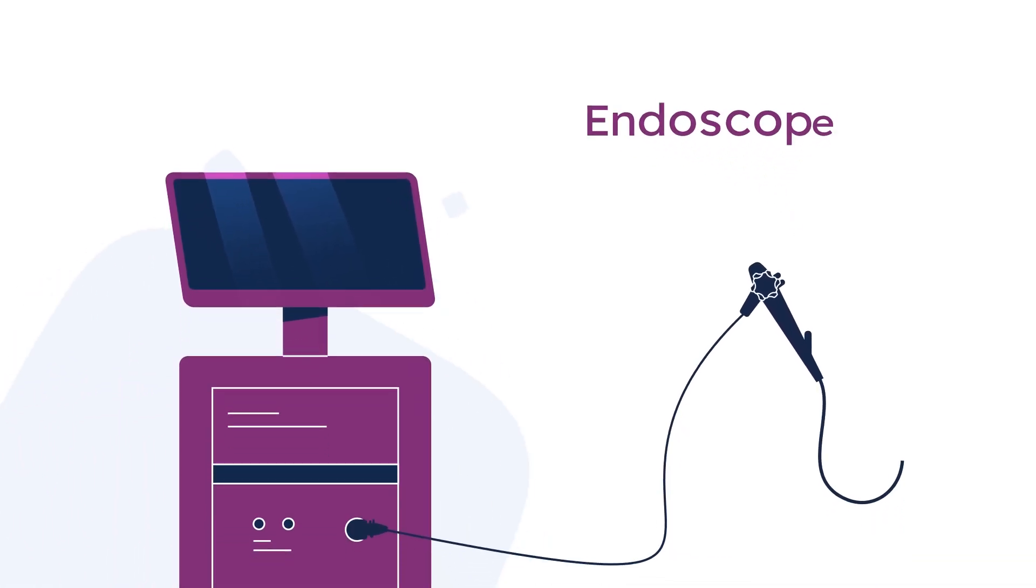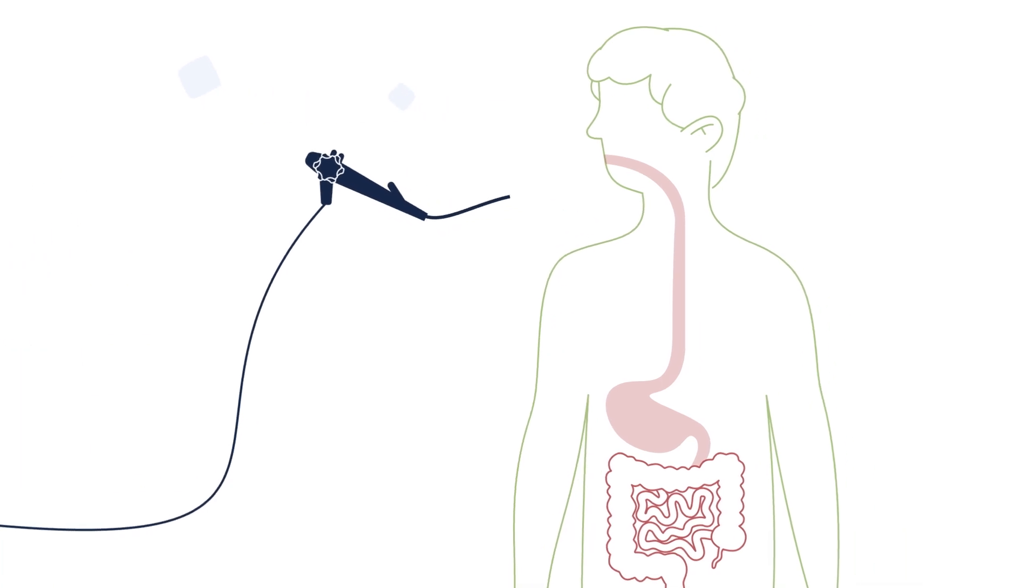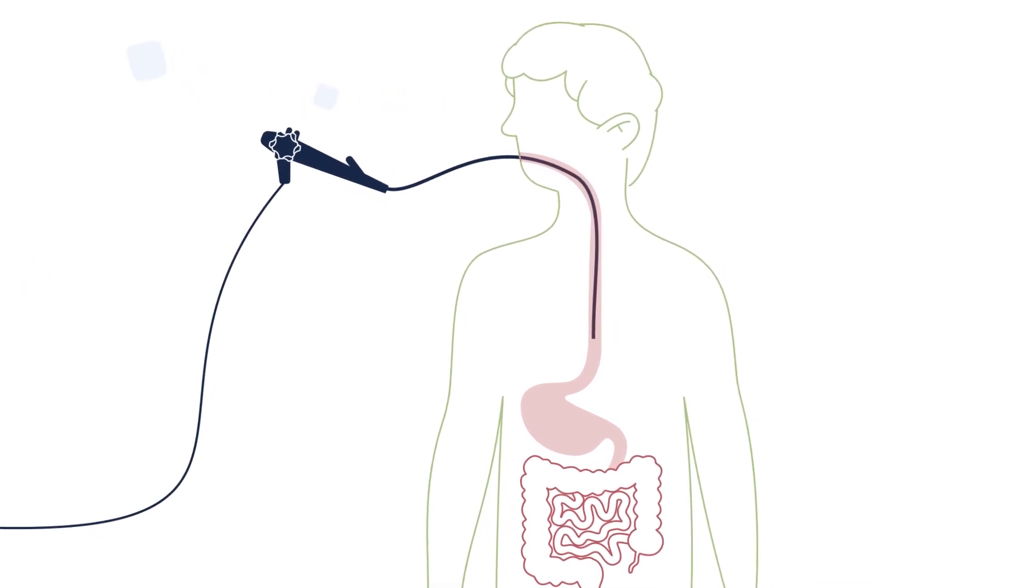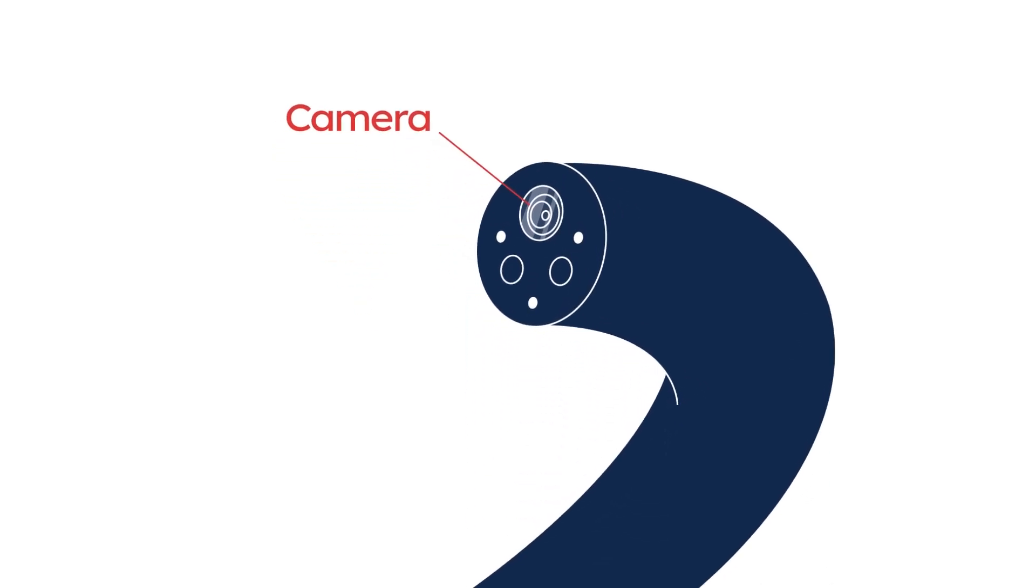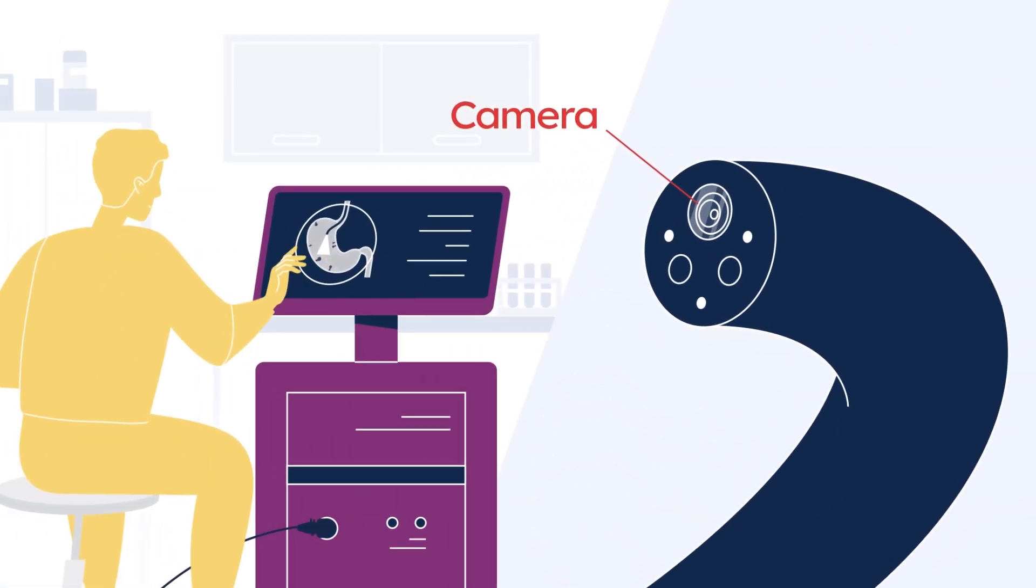In this procedure, a long, flexible tube called an endoscope is inserted into your mouth, past the stomach, and into the top part of your small intestine. The endoscope has a small camera attached to the end of it so that we can actually see the inside of your digestive tract.